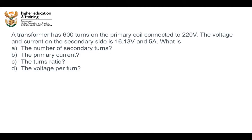In this video we're going to work through this question together. It says that a transformer has 600 turns on the primary coil which is connected to 220 volts, and the voltage and current on the secondary side is 16.13 volts and 5 amps. They have four parts: what is the number of secondary turns, the primary current, the turns ratio, and the voltage per turn.